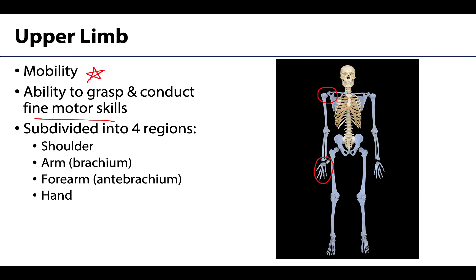We generally divide the upper limb into four major regions: the shoulder, the arm or brachium — and this whole upper limb is not the arm; colloquially we refer to the upper limb as the arm but it's only a specific portion that is considered the arm — the forearm or antebrachium, and then the hand and wrist region.